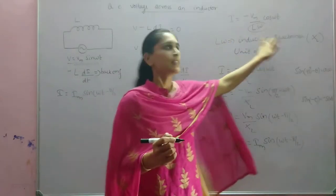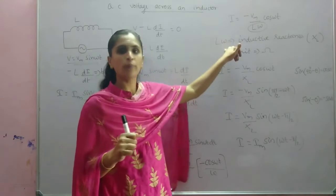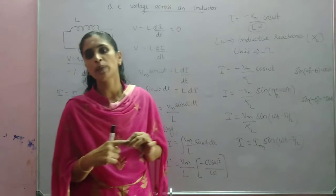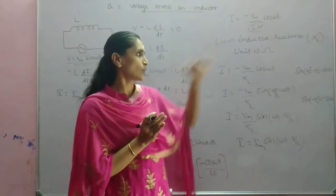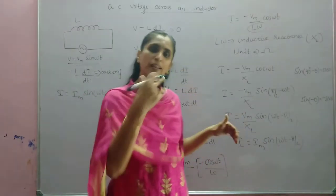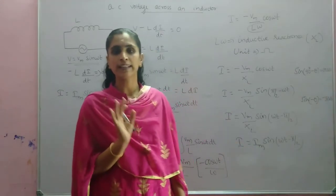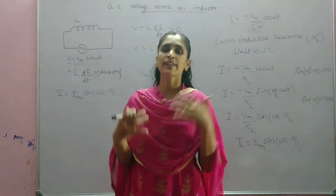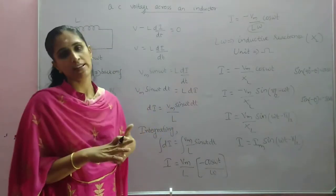Inductive reactance is given by Lω and it has the unit ohm. To find Lω: the frequency of AC will be given, and ω can be written as 2πf, so XL equals 2πfL. The peak value of current is given by Vm/XL where Vm is the peak value of voltage and XL equals Lω. Now we will discuss how voltage and current can be plotted in a graph and in a phasor diagram.